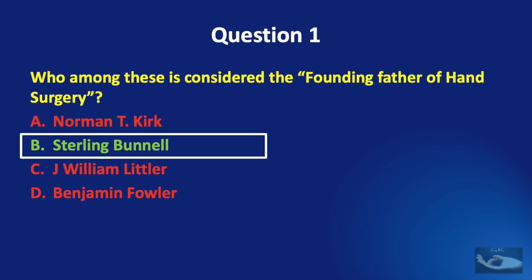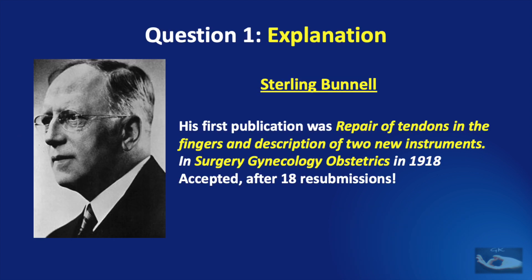The answer is Stirling Bunnell. Some interesting points about Stirling Bunnell, the Californian surgeon: his first publication was 'Repair of Tendons in the Fingers and Description of Two New Instruments,' published in the journal Surgery, Gynecology and Obstetrics back in 1918.